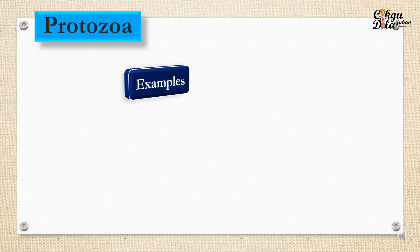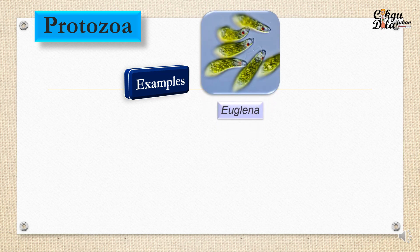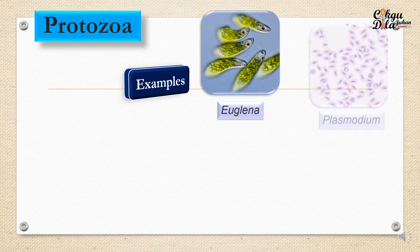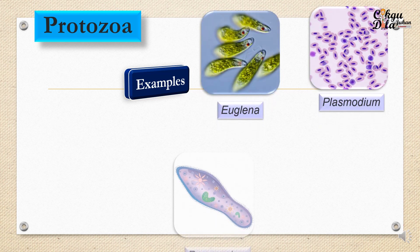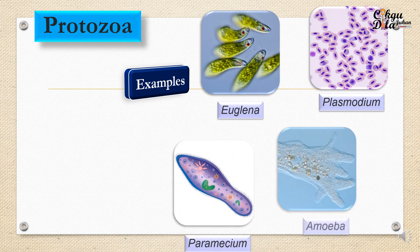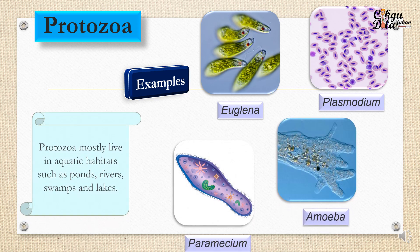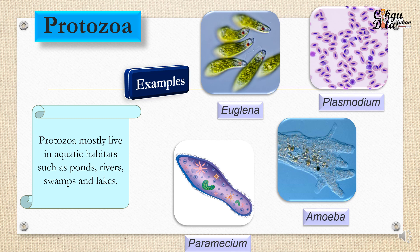We move to the third example, which is protozoa. Here are some examples: euglena, plasmodium, paramecium, and amoeba. Protozoa mostly live in aquatic habitats such as ponds, rivers, swamps, and lakes.